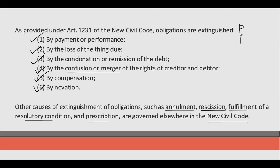P is Payment. R is Remission or Condonation — ibig sabihin lang nito ay nire-remit na or kinocondone, means pinapawalang sala na, hindi mo na kukolektahin yung utang dahil ayaw mo na siyang singilin.